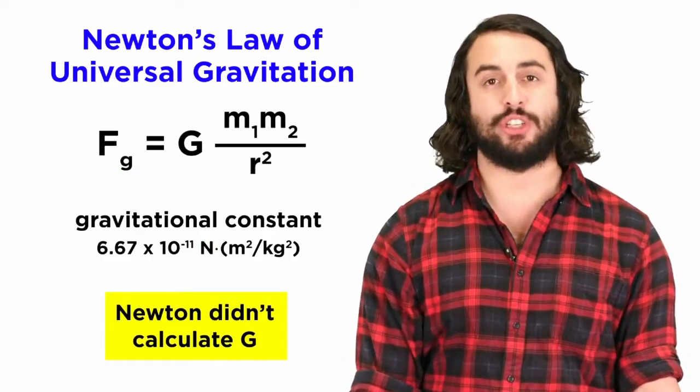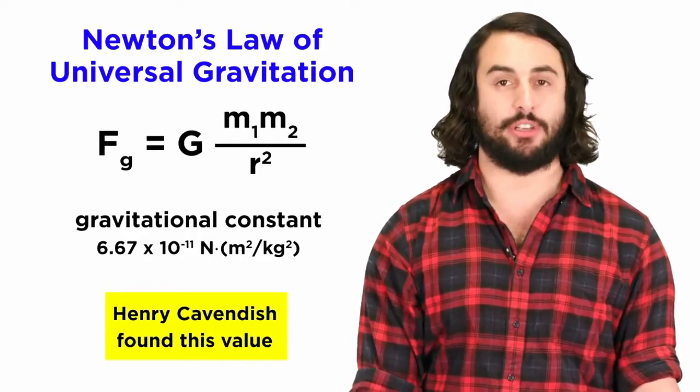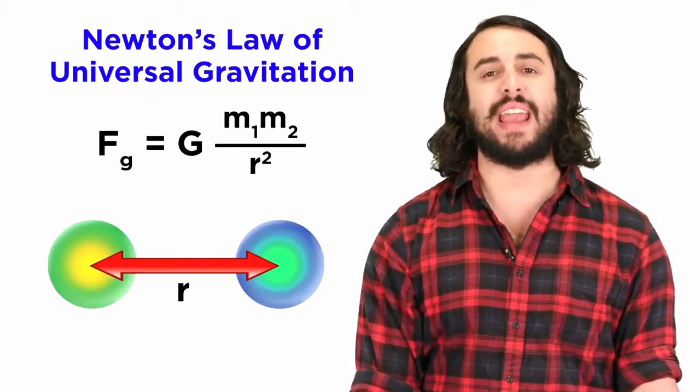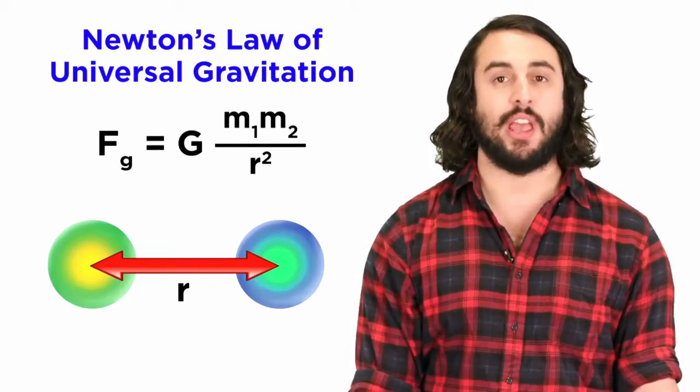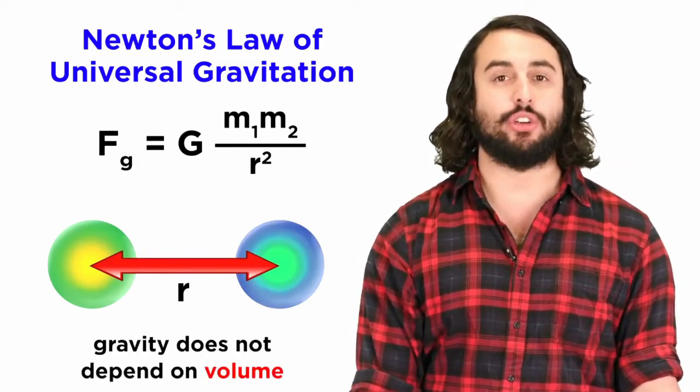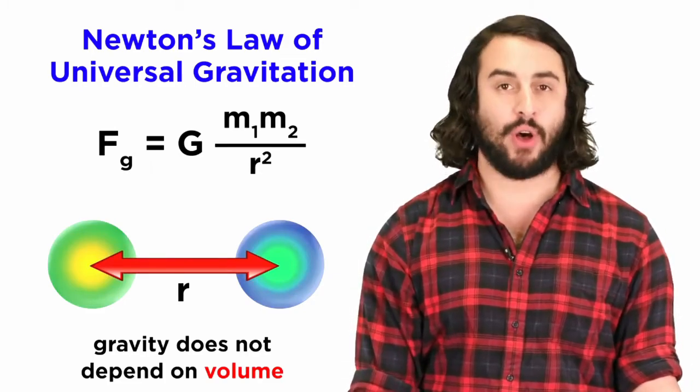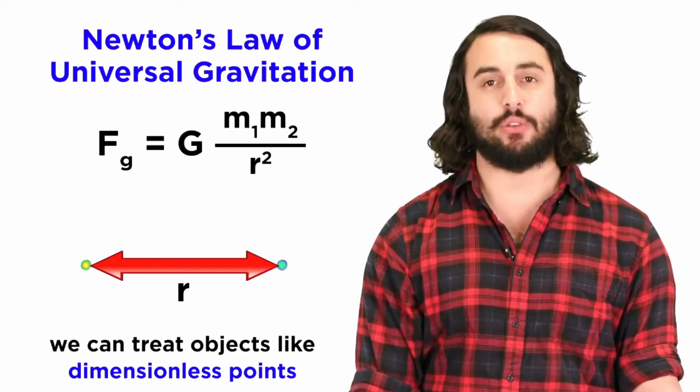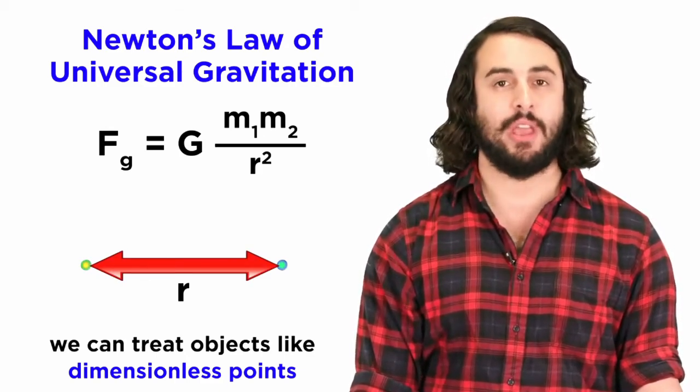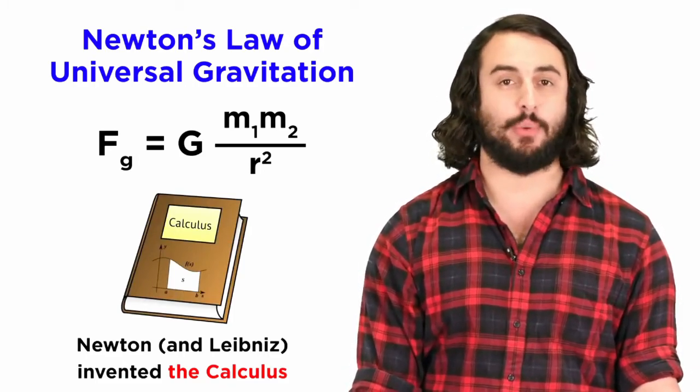This value was not known to Newton at the time but was determined experimentally about a hundred years later by Henry Cavendish. When discussing the radius between two objects, we will take the distance between their centers rather than their surfaces. As Newton showed, the gravitational force exerted by an object depends only on its mass and not on its volume, meaning that when discussing gravity, we can treat everything as a point-like mass. He had to invent the calculus to do so, much to the dismay of math students everywhere.